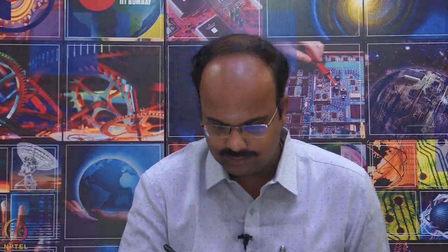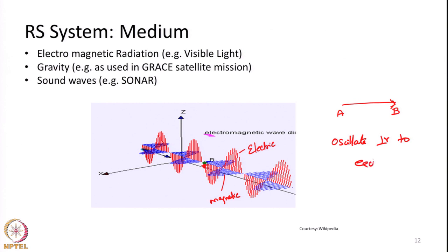That wave consists of two components as I said. The red one is the electric field and the blue one is the magnetic field. If you look at this particular slide, say the energy is travelling in this direction from point A to point B, that is from left to right in this particular screen. Electric field and magnetic field will oscillate in a direction perpendicular to each other.